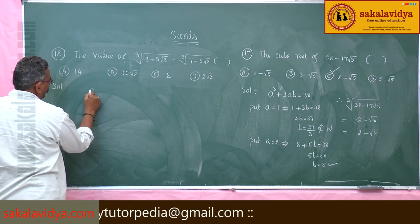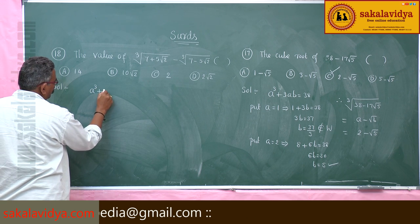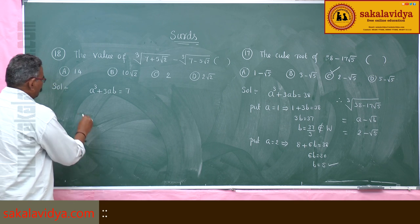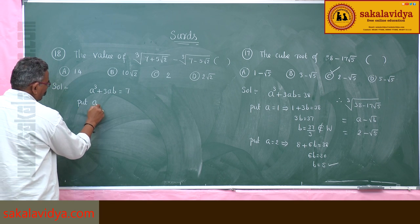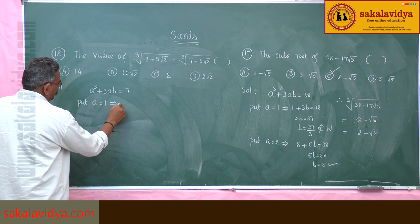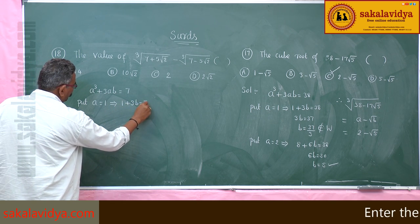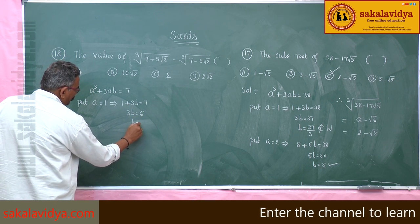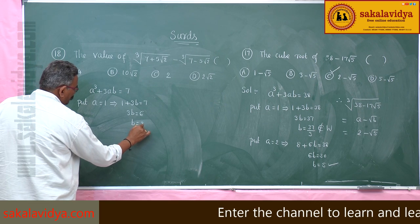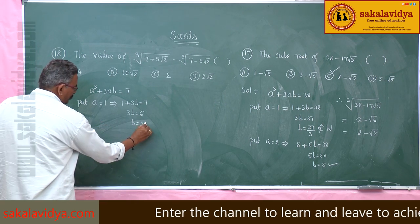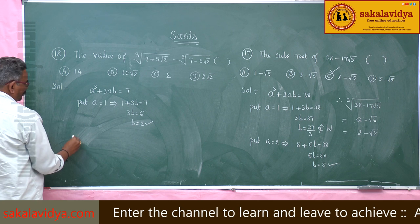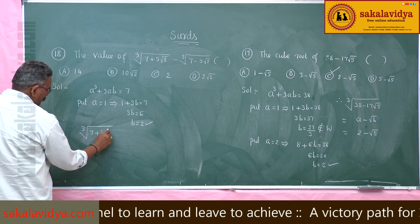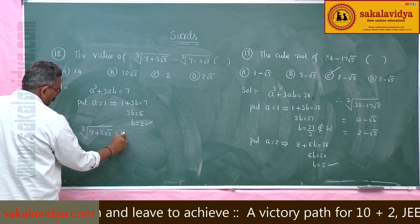Say a³ + 3ab = 7. Put a = 1. Now we get 1 + 3b = 7, so 3b = 7 - 1 = 6, therefore b = 6/3 = 2. Since 2 is a whole number, the cube root of (7 + 5√2) equals a + √b, which is 1 + √2.